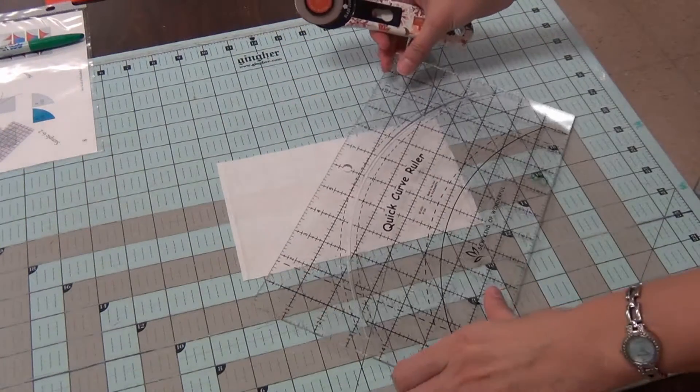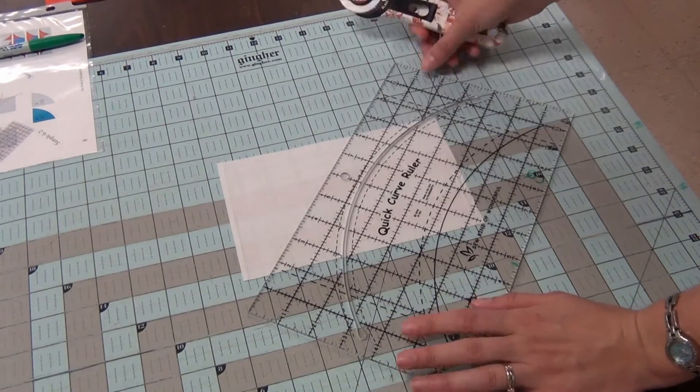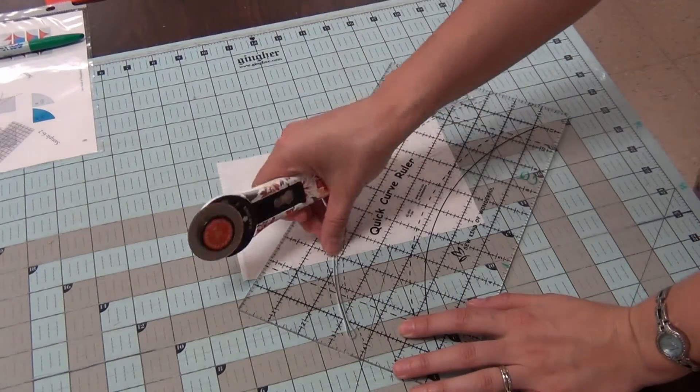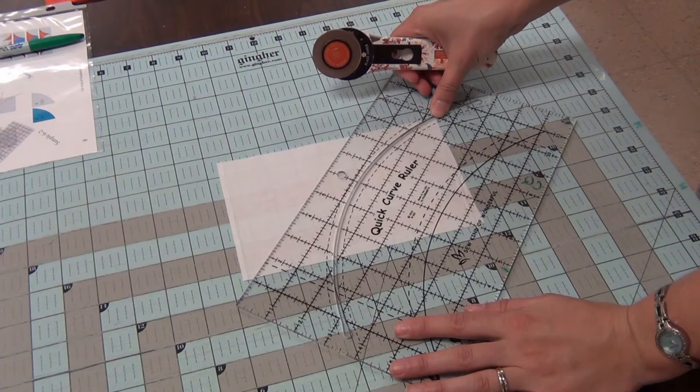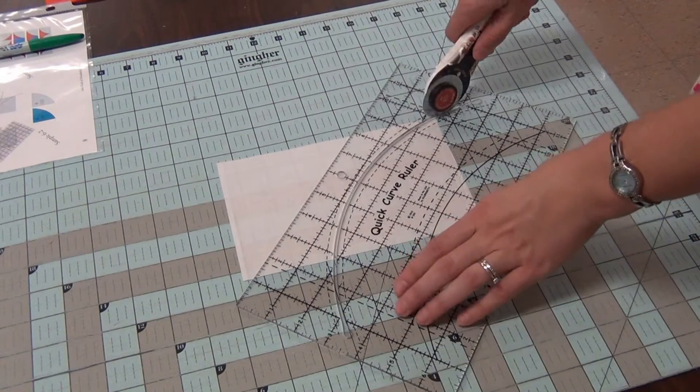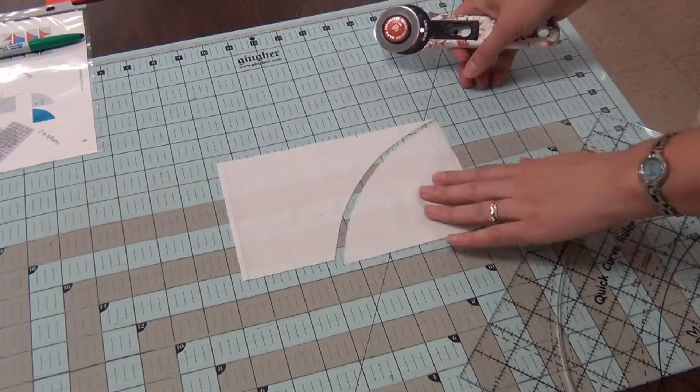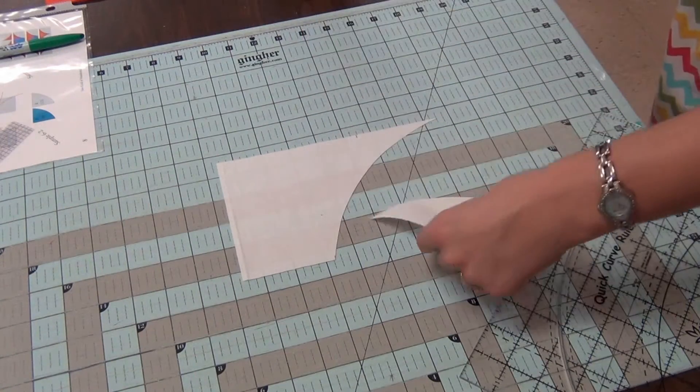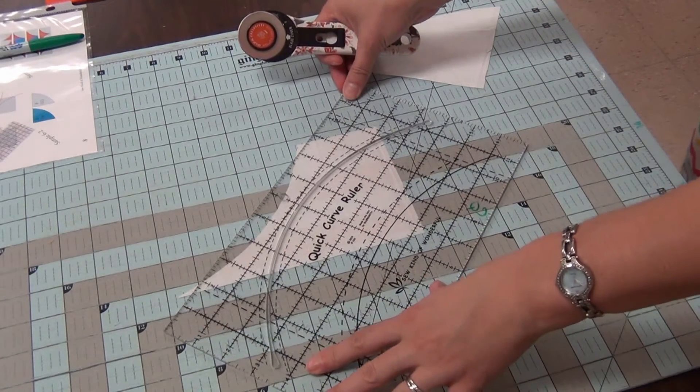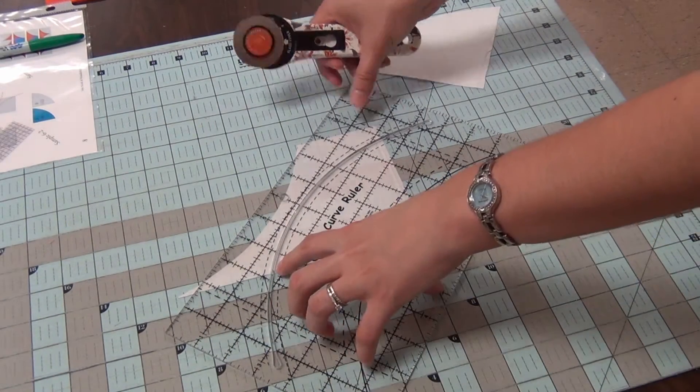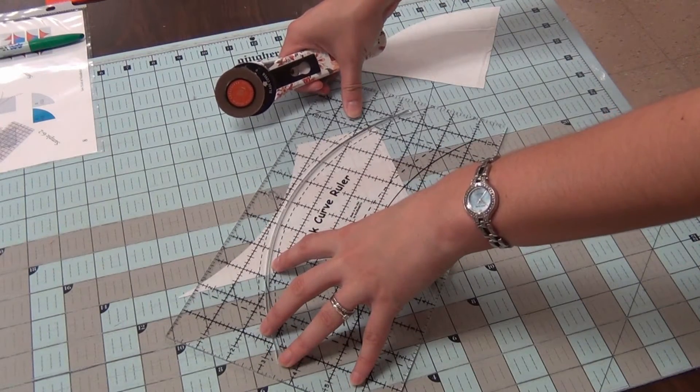I'm going to take my ruler and I want to make sure that point is lined up here and my curve is lined up at that mark and then at the corner as well. I'm going to cut that segment. Turn this around so I actually can get two out of each cutting here and then also at the corner.